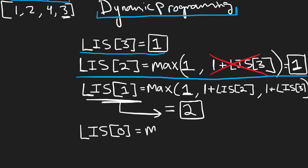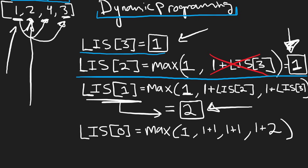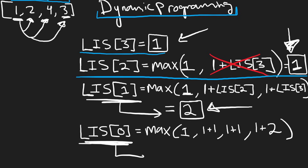Now we want the longest increasing subsequence starting at index zero. We could take one by itself — that's one. Or we could add it with the longest increasing subsequence starting at two, or at four, or at three. We get one plus one from index one, one plus one from index two, and one plus two from index one. We're allowed to do all of these because two, four, and three are all greater than one. So the longest increasing subsequence at index zero is three — which is what we want.